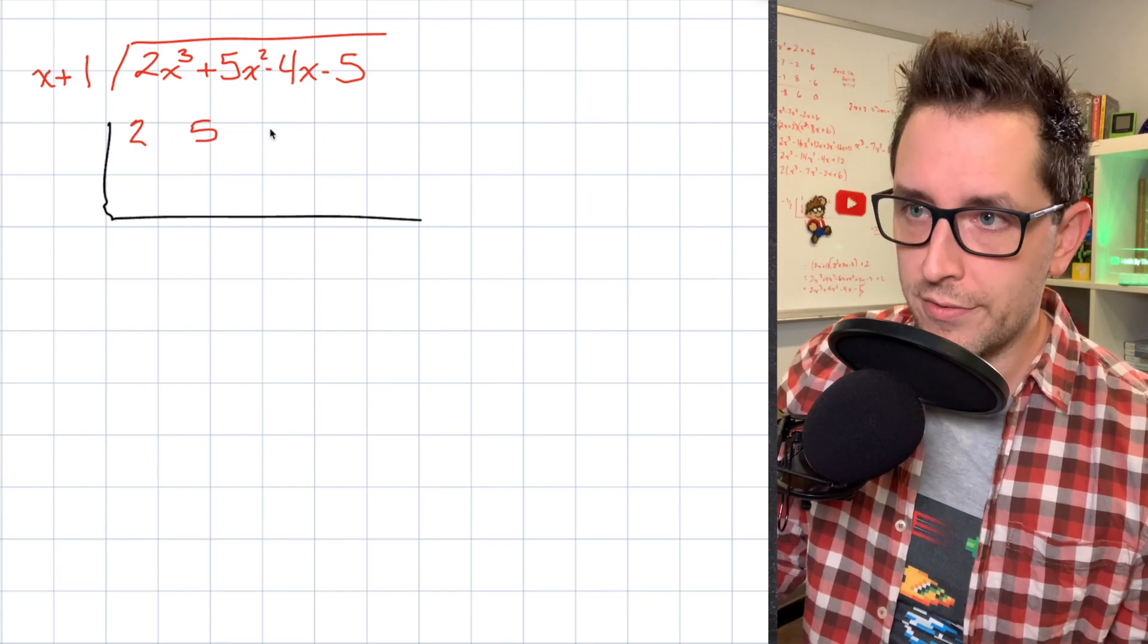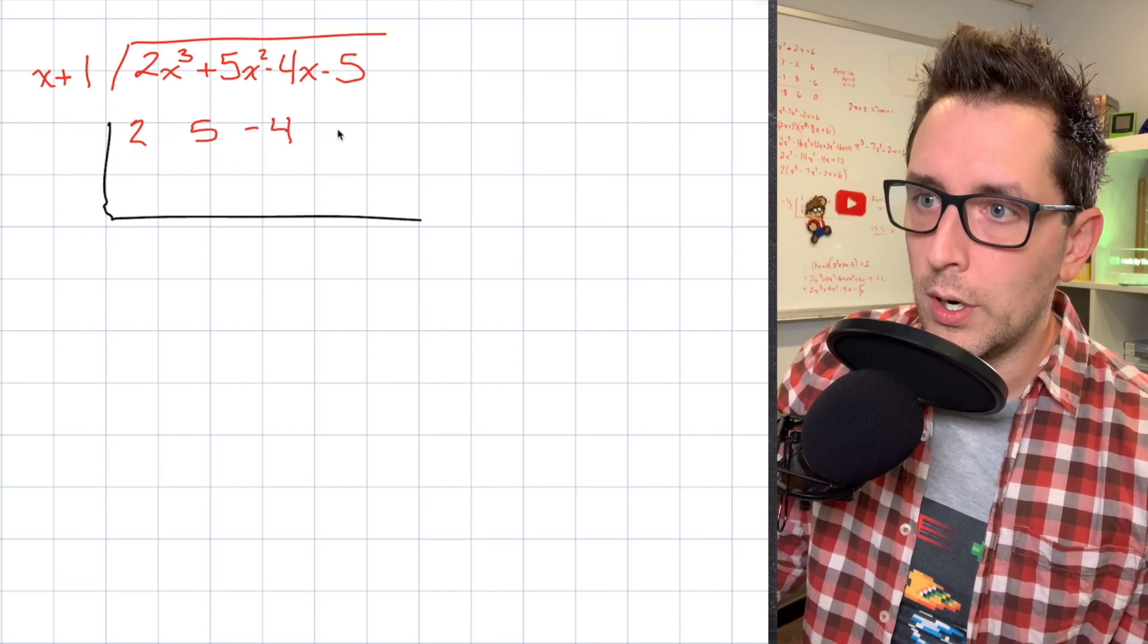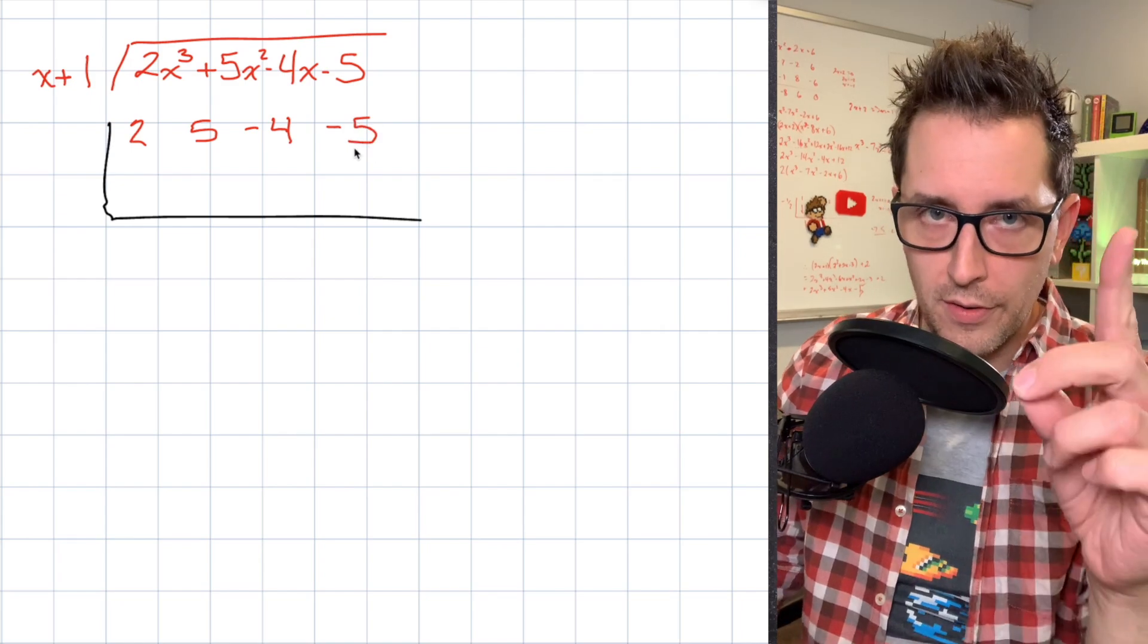Okay, so I've got my 2, I've got a 5, I've got my negative 4, and I have a negative 5 at the end here. Okay, so that's the first step.